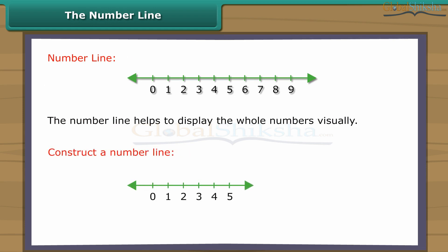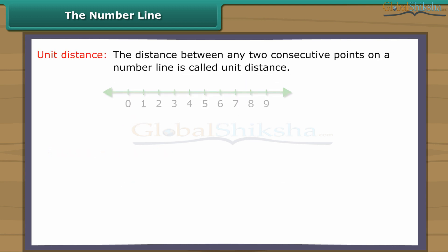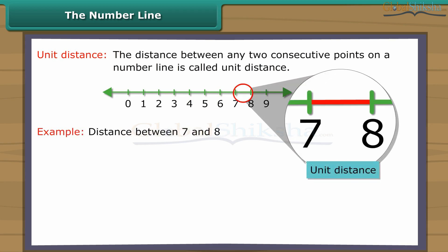The number line. The number line helps to display the whole numbers visually. To construct a number line, we simply draw a straight line and choose any point on the line and label it zero. This point is called the origin. We then choose some convenient length and moving to the right, mark off consecutive intervals along the line starting at zero. We label each new interval end point with the next whole number. The distance between any two consecutive points on a number line is called unit distance. Out of two whole numbers, greater number comes on the right of other number on the number line.